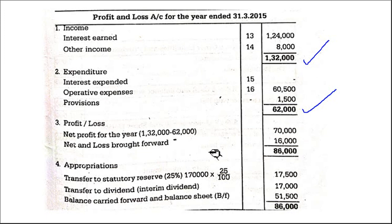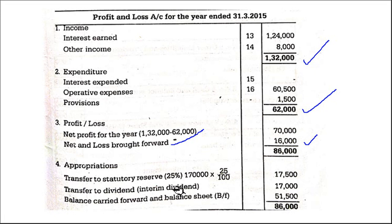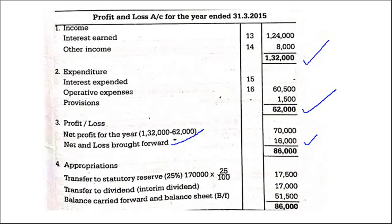Net profit brought forward — this is given in the trial balance, last year's profit — 16,000. So total profit we have is 86,000. Now appropriation comes. They said transfer to statutory reserve — 25%. Be careful while transferring: you can't take 86,000; you have to take only the current year's profit. So you are taking 70,000 into 25% = 17,500.